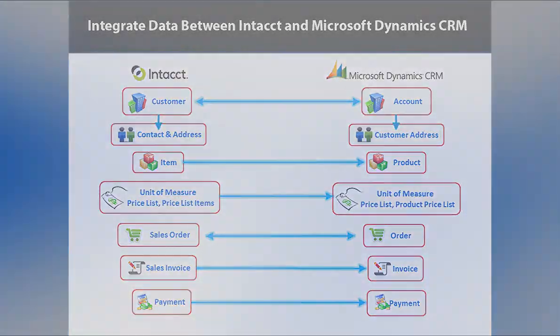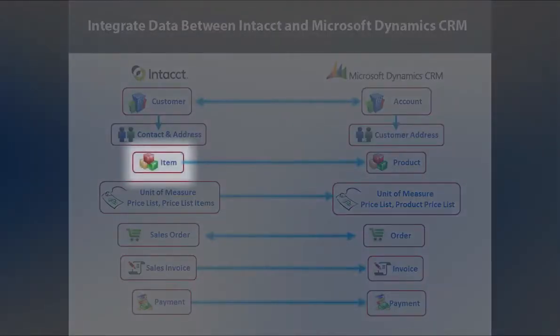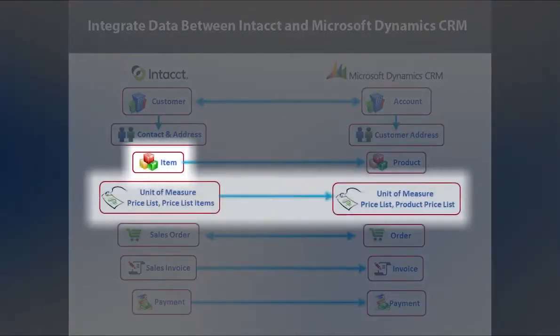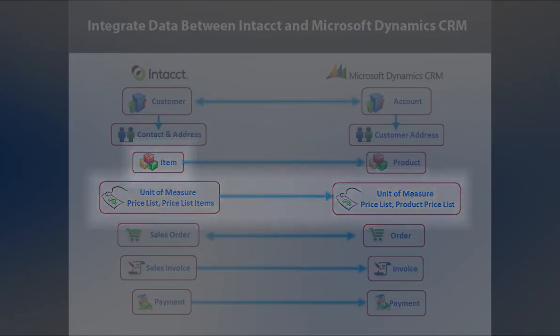These objects would include items, price lists, and unit of measure. They will be imported into CRM to be used with your sales process objects, such as opportunities and sales orders.